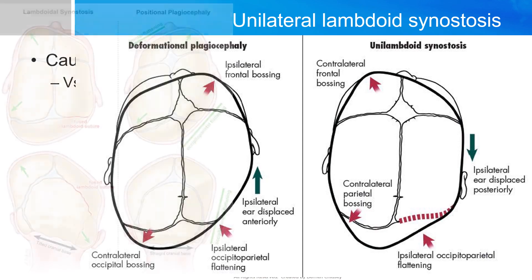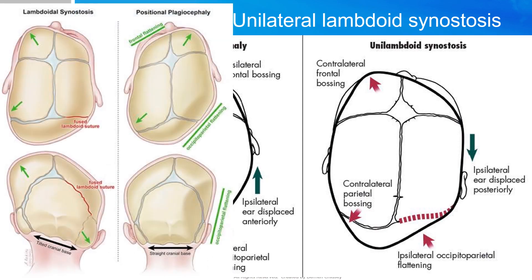In addition, lambdoid synostosis will have a tilted cranial base with a prominent ipsilateral mastoid process, versus a straight cranial base in the case of positional plagiocephaly.